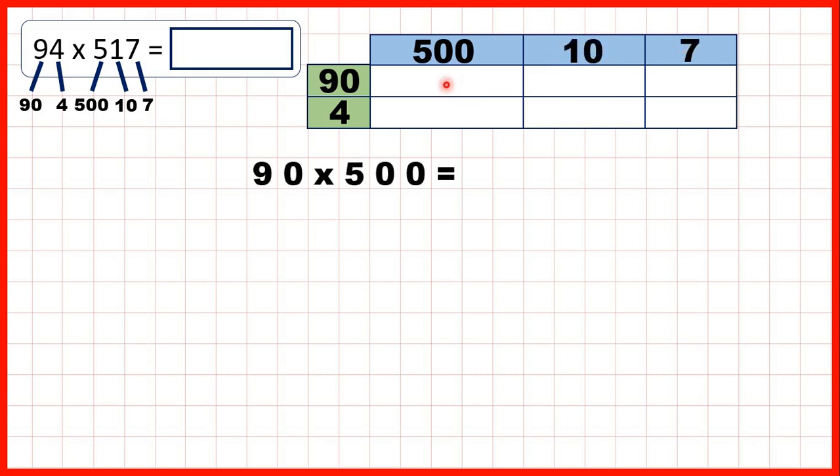And now for this box we need to work out 90 times 500. That's 45,000 because 9 times 5 is 45. But then we have three end zeros in the question—one here and two here—so we need three end zeros in our answer.